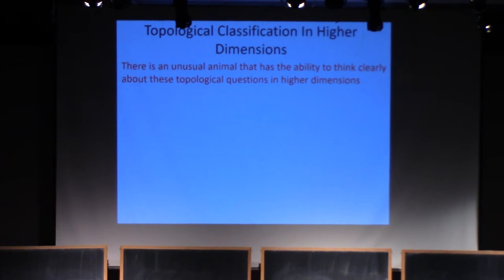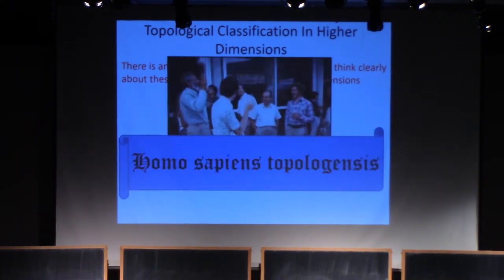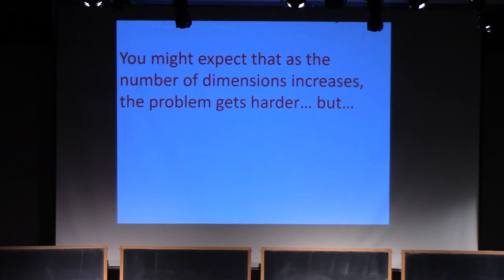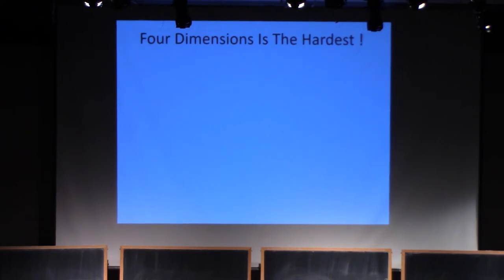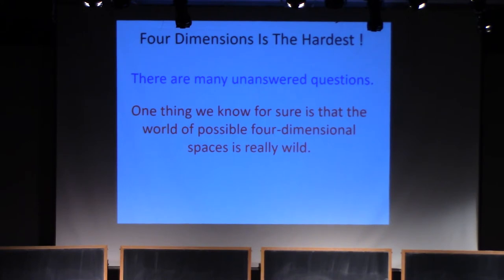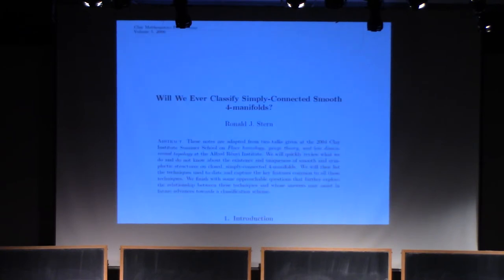Fortunately, there's an unusual animal that has the ability to think clearly about these topological questions in higher dimensions. This is the subspecies Homo sapiens topologensis. This animal can find topological invariants of higher dimensional spaces. What has this animal discovered? You might expect that as the number of dimensions increases, the problem gets ever harder, but there's a bit of a surprise, at least for some questions. Four dimensions is the hardest. There are many unanswered questions about the topology of four dimensional spaces. One thing we know for sure is that the world of four dimensional spaces is really wild, and we do not know anything even close to a complete topological invariant. Mathematicians that work on this topic write papers with titles like, will we ever classify simply connected smooth four manifolds? A four manifold is just a four dimensional space.